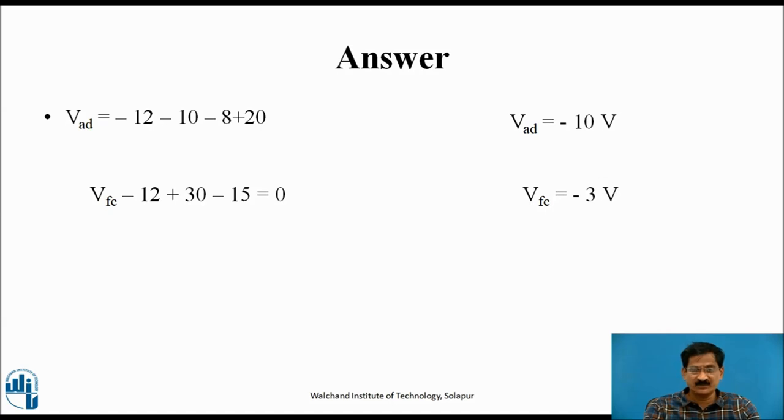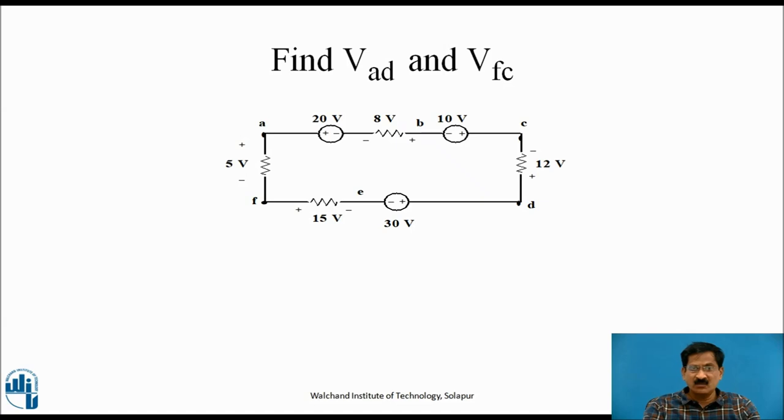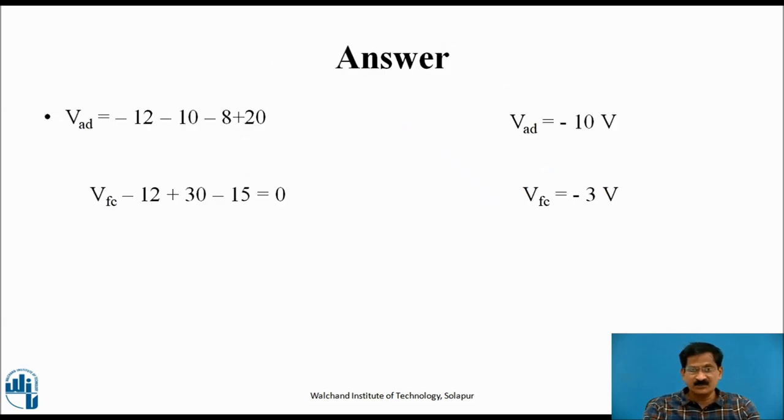VFC is the voltage at potential at point F with respect to C, with C being the reference point. Starting from C, first is 12V from negative to positive, which is a positive drop. After D, it is 30V from positive to negative, minus 30V. Then point E, then 15V which is minus to plus, so plus 15V. The equation becomes VFC equals 12 minus 30 plus 15 equals minus 3V.